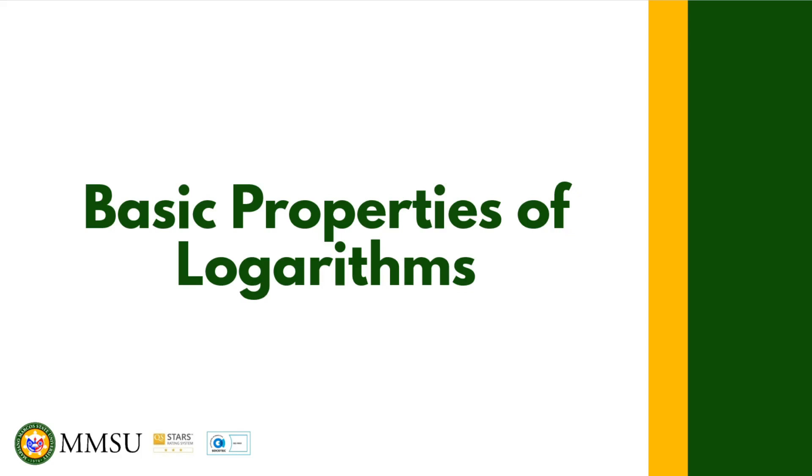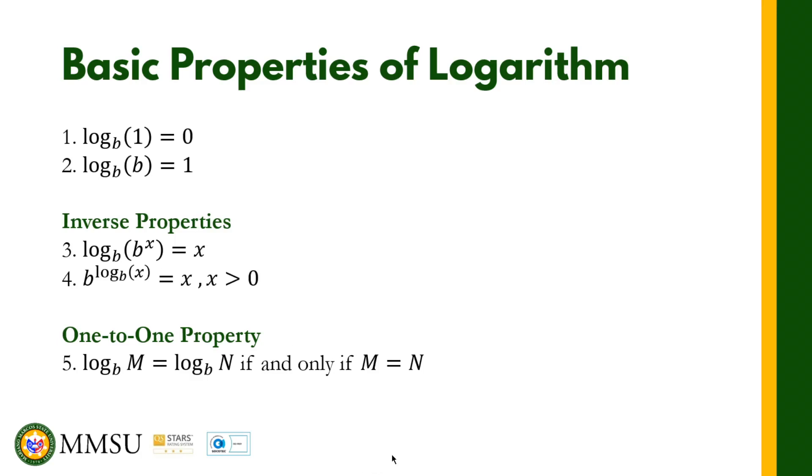Listed on the slides are the basic properties of logarithms. For the first one, we have log_b(1) = 0. Whatever the base b, as long as the number is 1, the logarithm of 1 is always equal to 0, regardless of the base.